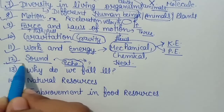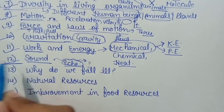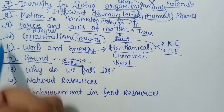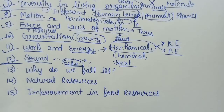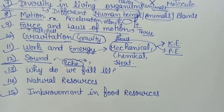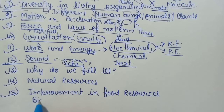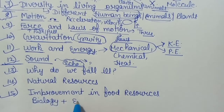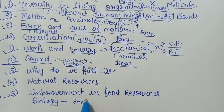तो यहां तक — from chapter 8 to chapter 12 — we will have the physics portion, इसके अंदर हम complete physics पढ़ेंगे। उसके बाद जो chapters हैं — 13th, 14th and 15th — यह हमारी biology और environmental science का mixture रहेगा।